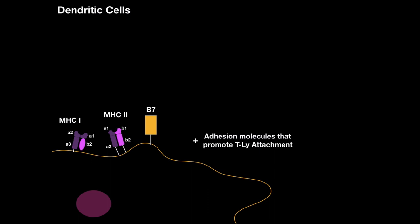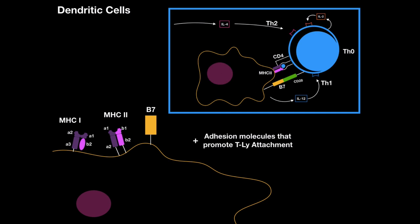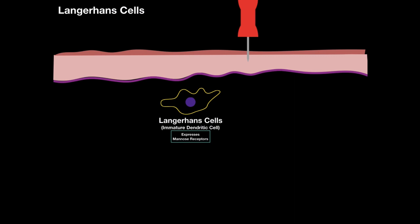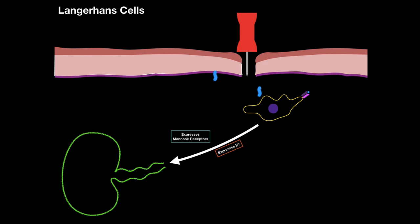Following antigen presentation, B7 is what makes these cells professional antigen-presenting cells. Langerhans cells, however, don't have B7, so they are sometimes referred to as immature dendritic cells. They do express mannose receptors, so any damage or infection in the skin allows Langerhans cells to react, phagocytose, and express a peptide from the microorganism on MHC class 2. They then travel to the lymph node where they can express B7 and become a mature dendritic cell. That was mainly everything for antigen-presenting cells — I hope it was helpful.